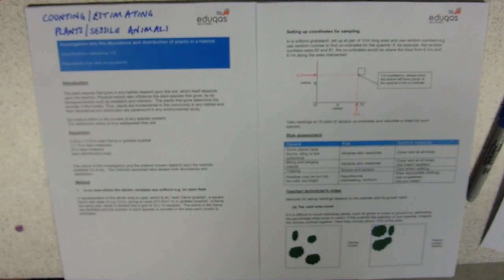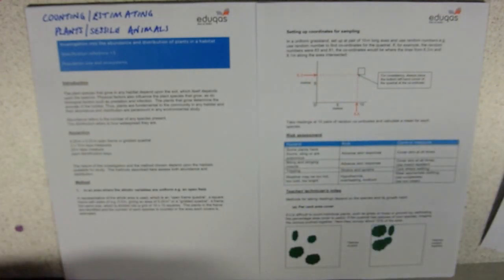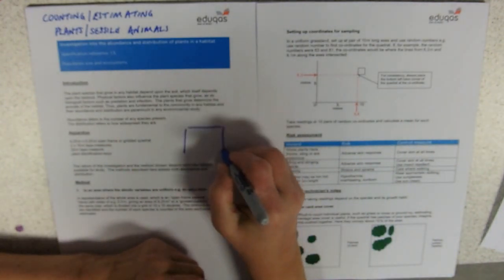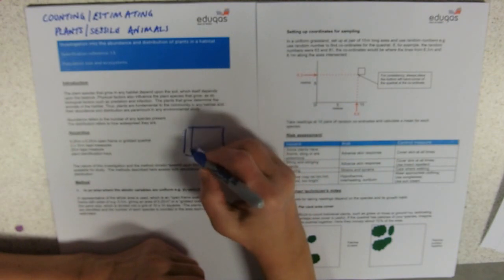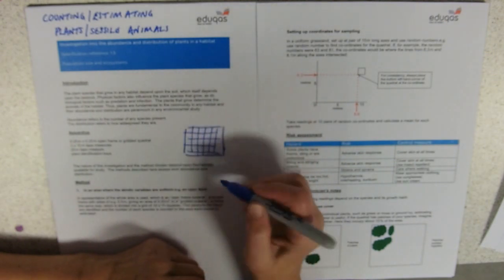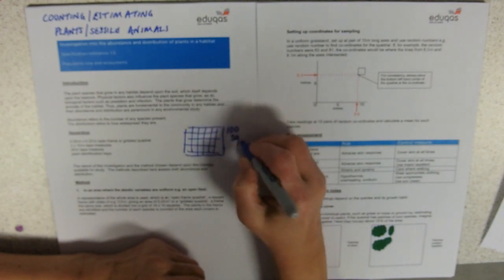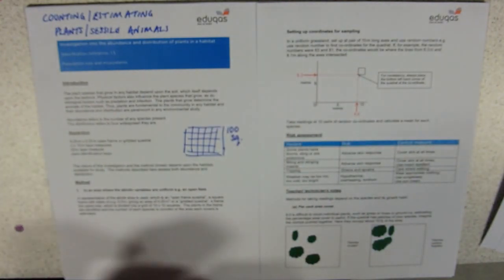The key piece of equipment for any ecologist is a quadrat. They come in a variety of sizes and generally have grids on them — so they're gridded quadrats — and they generally have 100 squares. The ones we use are quite large and they've got 100 squares.